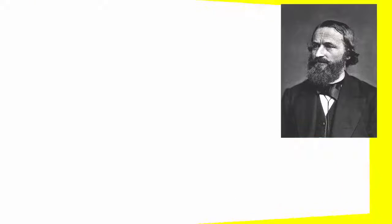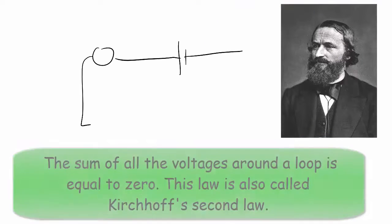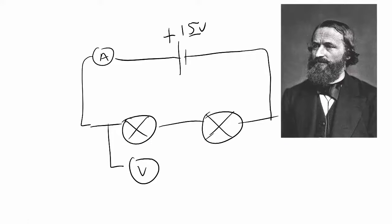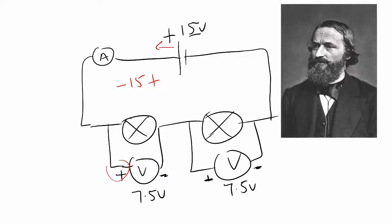So Kirchhoff's voltage law states that the sum of the voltages, if you go around a closed loop in the circuit, will add up to 0. So we saw that the voltage across the cell was 15 volts and the voltage across each of the bulbs was 7.5 volts. Now if we go around this circuit in the anti-clockwise direction starting at the positive side of the cell, counting the 15 volts as negative and then the positive 7.5 and another positive 7.5, they all add up to 0, demonstrating Kirchhoff's voltage law.